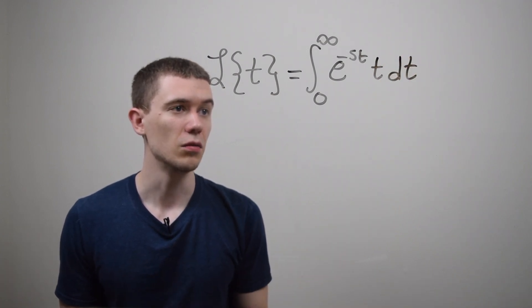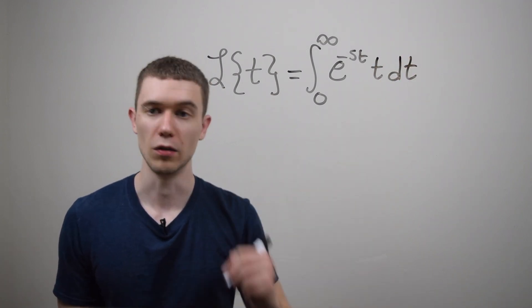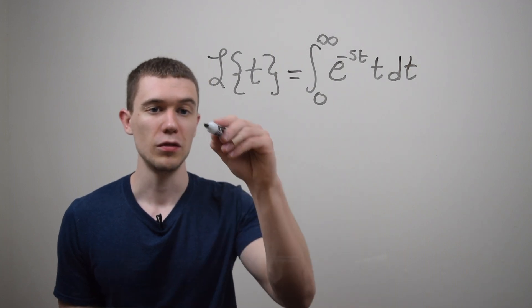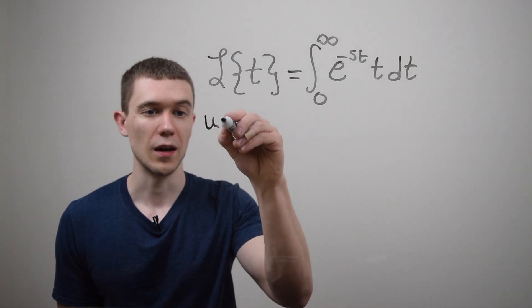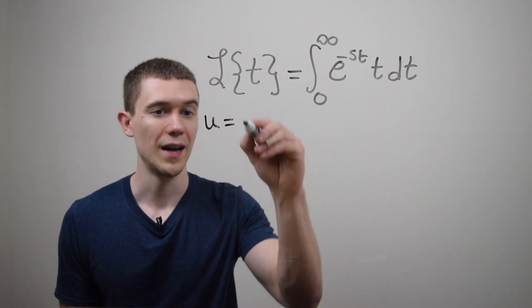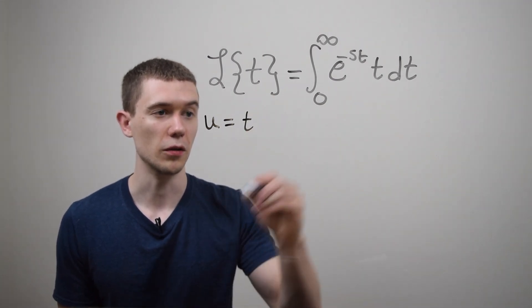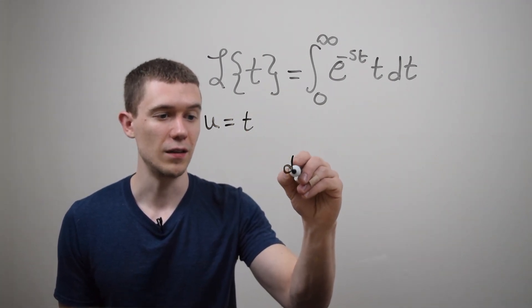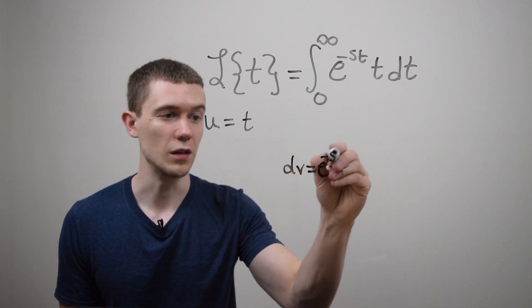Well it looks like to do this problem I'm going to have to do integration by parts and usually how you do that with exponentials and polynomials is you let u be the polynomial and you let dv be the exponential function dt.